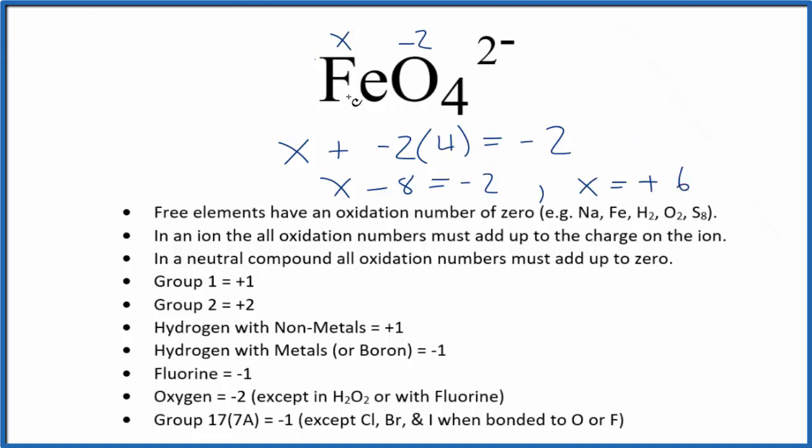So the oxidation number on the Fe in FeO4 2- is positive 6. And we're not used to seeing iron with an oxidation number like +6, but it is possible, and that's the oxidation number in FeO4 2-.